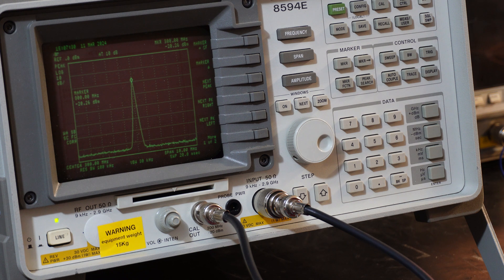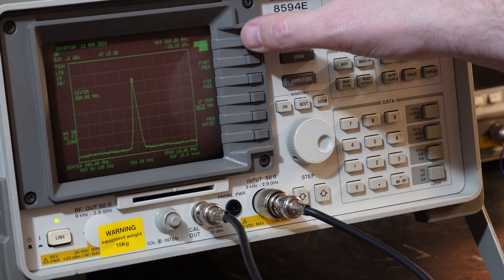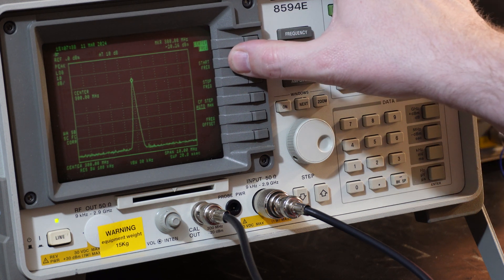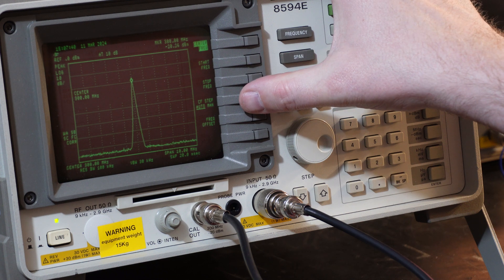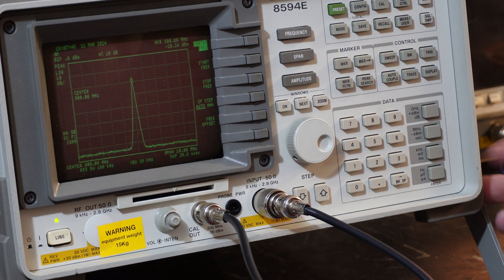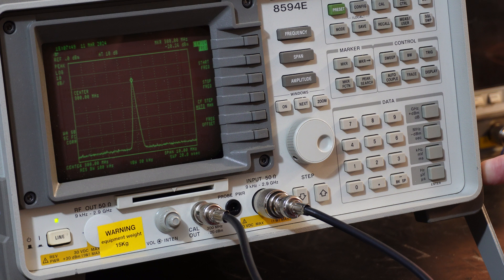I'm just going to have a look. If I hit frequency again - center frequency, start frequency, stop frequency, frequency offset. I'm just looking for the frequency counter. Where is the frequency counter?